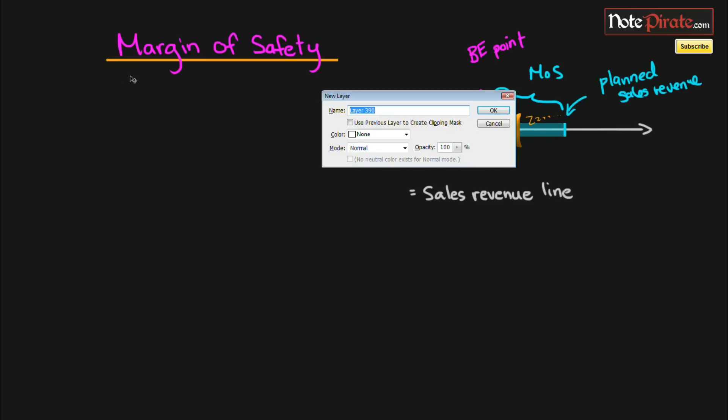As for the margin of safety, two tutorials ago we were talking about break-even points for an airline—I think it was called Jet Airlines—and our break-even point was 100,000 flights. For this example, I'm just going to say that our planned is 150,000 flights.